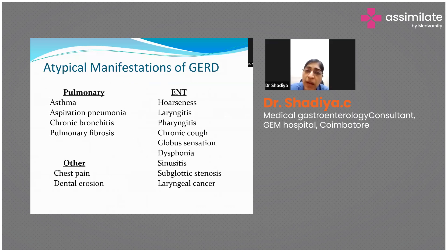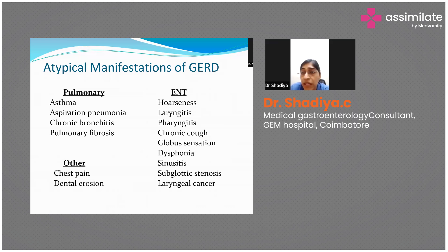Atypical or extraesophageal manifestations of GERD include asthma, bronchitis, chest pain, dental erosions, and ENT symptoms such as hoarseness, laryngitis, and chronic cough. ENT examination findings may be completely normal, yet the patient still has these symptoms. Whenever a patient has had these symptoms for a long time, we must rule out an underlying GERD.